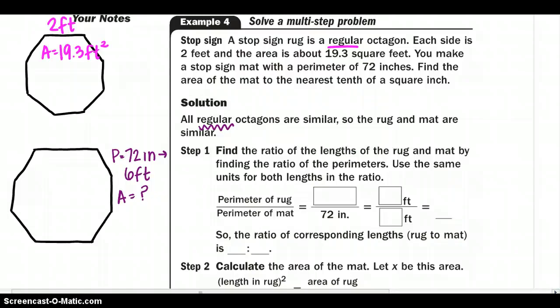The rug and mat are similar. Find the ratio of the lengths of the rug and mat by finding the ratio of the perimeters. Well we don't have the perimeter of the top one, but we know that the perimeter is all of the sides added together. Since an octagon has 8 sides, I'm going to multiply one side by 8 to get my perimeter of 16 feet. So now I have something in common. The perimeter of my rug is 16 feet over 6 feet, and I get a ratio of 8 to 3.